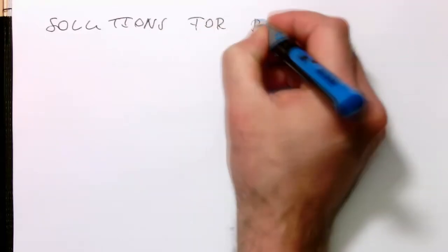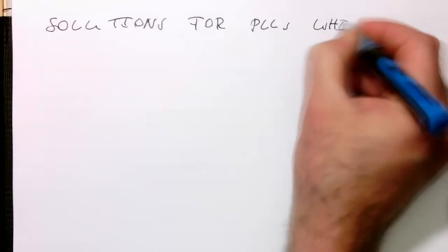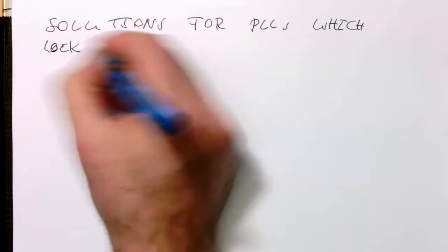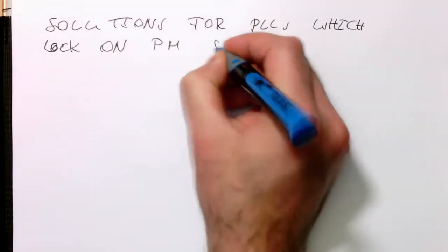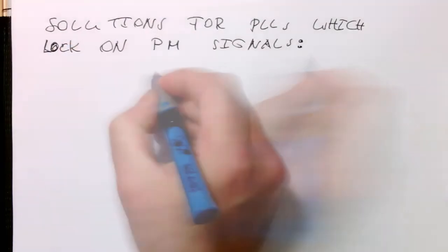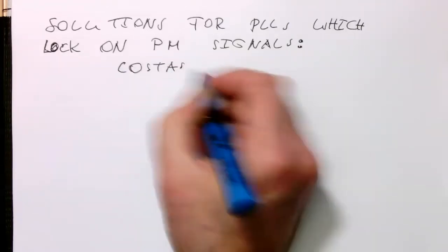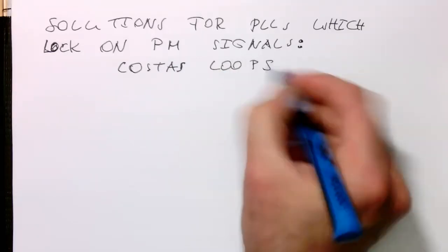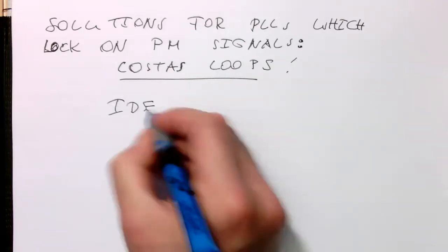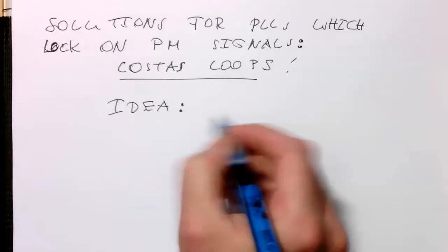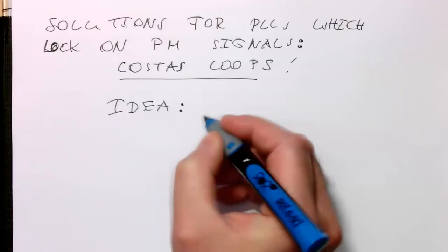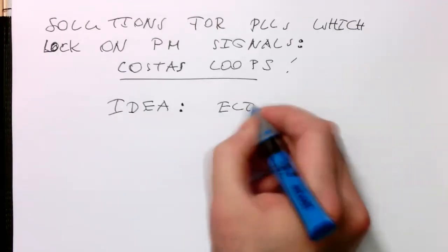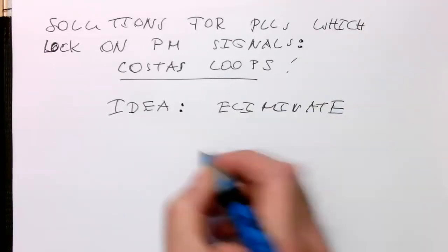Now let's find solutions for PLLs which lock on phase-modulated signals. And these solutions are usually called Costa's loops. So the main idea behind all these Costa's loops or variations of this is that these loops eliminate the phase information.